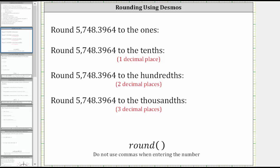As examples, we will round 5,748.3964 to the ones, tenths, hundredths, and thousandths place value.